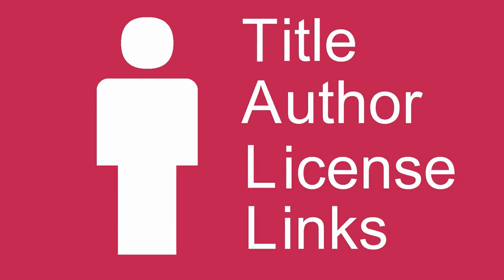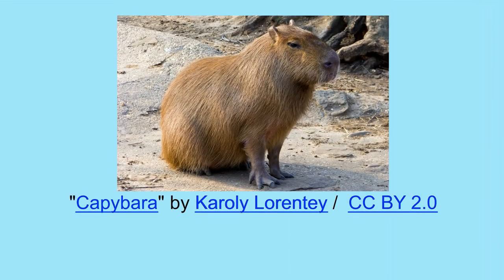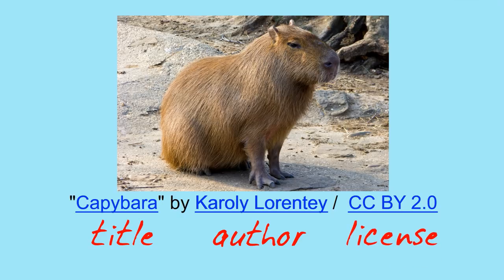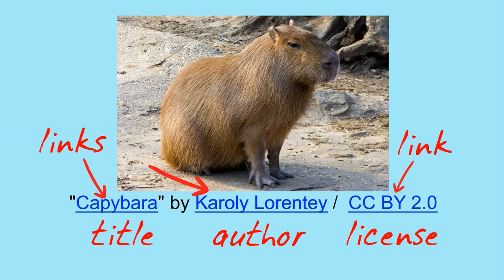Here's attribution in action. First, you add the title in quotations. Then you add the author, which might be a real name, a screen name, or a company's name. Then add the license — you can write it out or use acronyms. Finally, you provide a link to the author, title, and license so someone else can find the work and read how to use it.